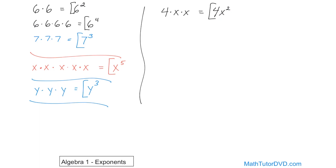What if you had negative 6 times z times z times z? The negative 6 is only present one time, so it can't be written as an exponent, but the z's are there three times, so the way you write this is negative 6 times z to the power of 3. This tells you it's negative 6 times z times z times z — that's what it means, and that's how we write it as an exponent.